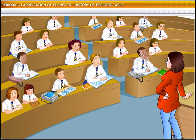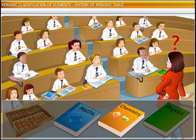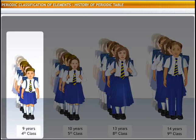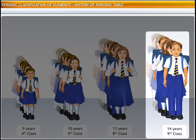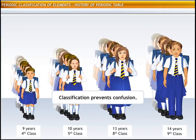Imagine how difficult it would be for a teacher if she had students of five different age groups in the same class. Trying to teach different subjects and handle different levels of complexity for each student would result in a lot of confusion. Students in a school are allocated to classes based on the age group they belong to, because students in a class are likely to have similar attributes in terms of the level of knowledge, capabilities, height and weight.